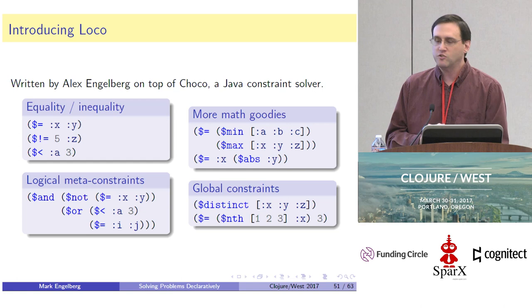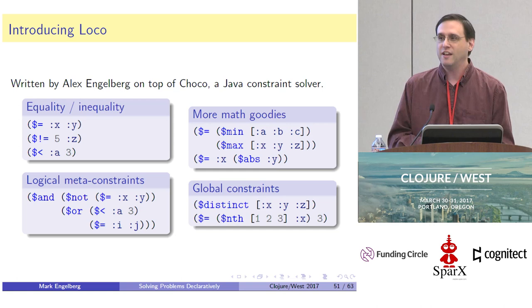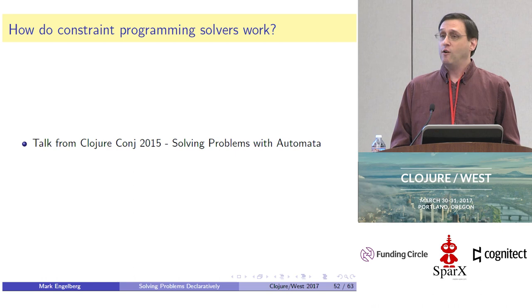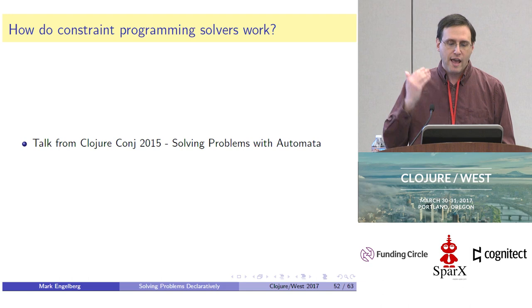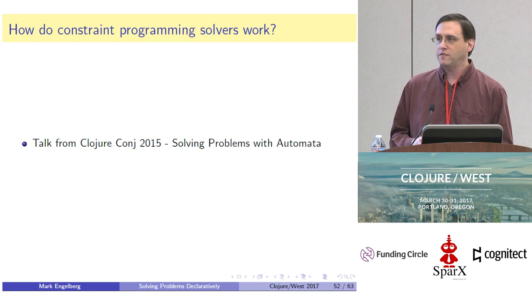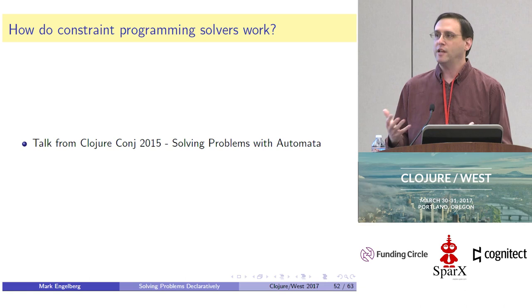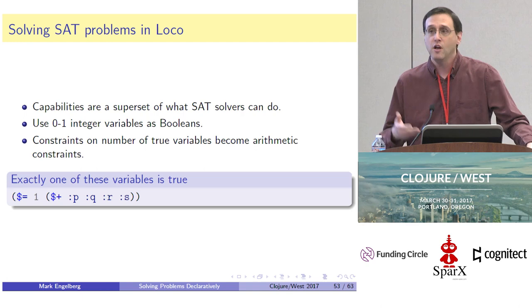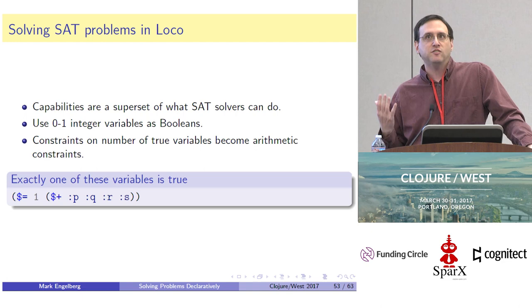These are some examples of the constraints built into Loco — you'll notice they all start with a dollar sign. It's not a jQuery thing; it's just a convention used in Loco to make the constraints visually stand out from other functions. You may be wondering how constraint programming solvers work, but that's outside the scope of this talk because Alex Engelberg explained it in the talk we gave together at Clojure Conj 2015, 'Solving Problems with Automata.'